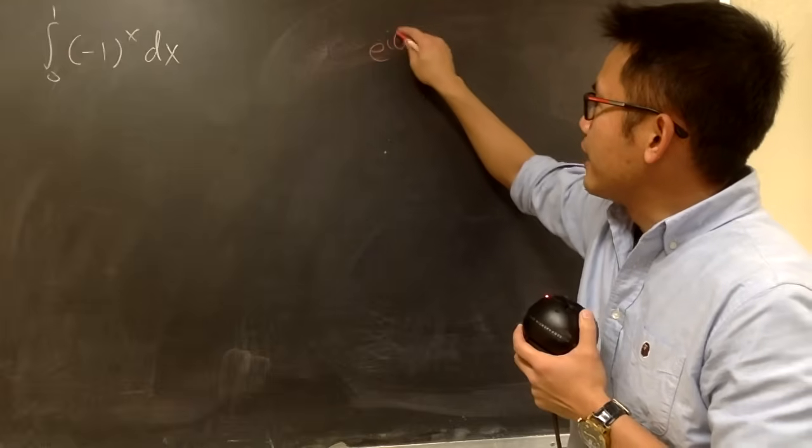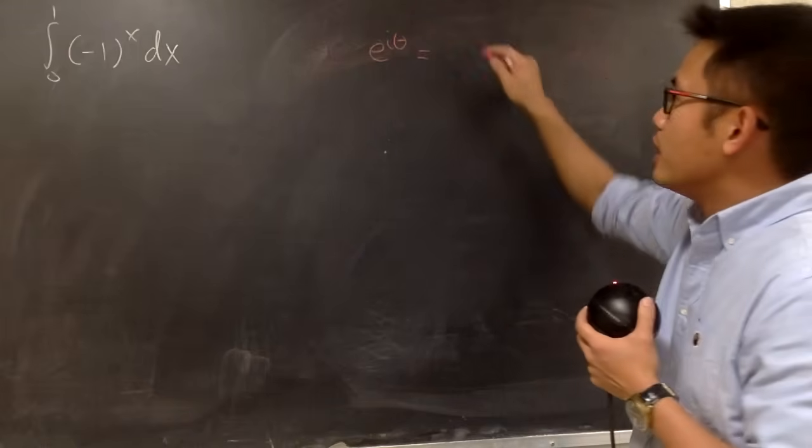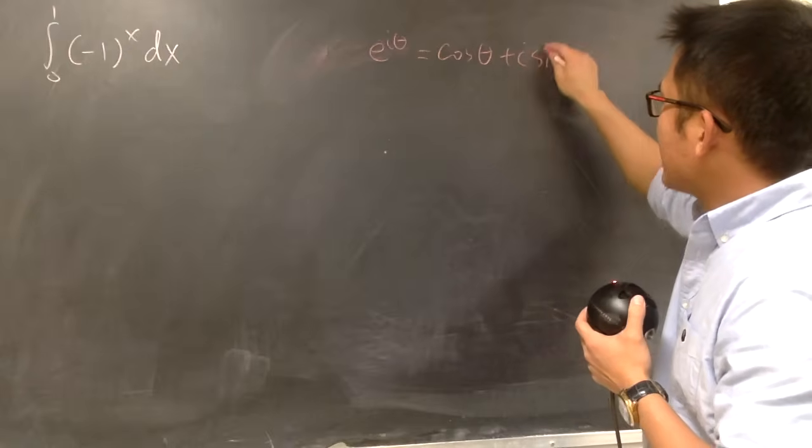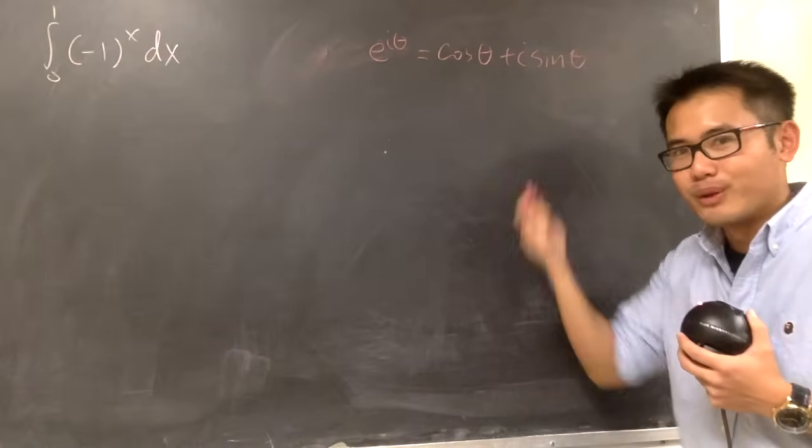So let me put it down right here. We know that e to the i theta, this is equal to cosine theta plus i sine theta. Euler's formula, right?